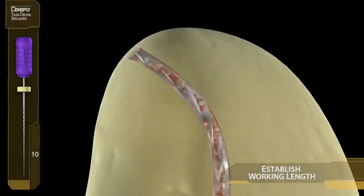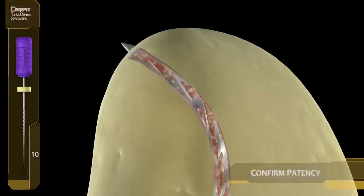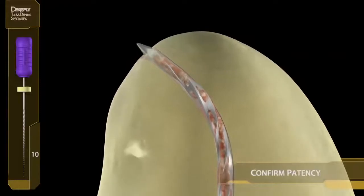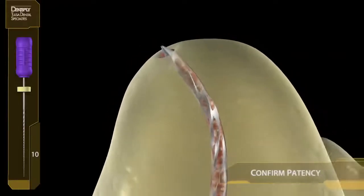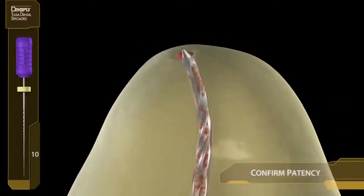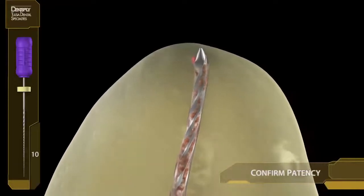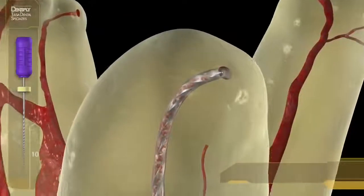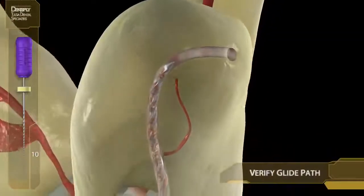What is a glide path? How do we make it? A glide path is a super duper, unbelievably loose #10 file validating a smooth tunnel from the orifice to the apex. It is a smooth tunnel from orifice to apex. It could be short, curved, or have multiple curves.